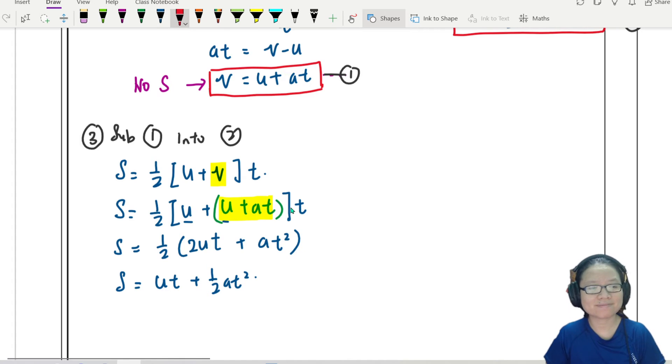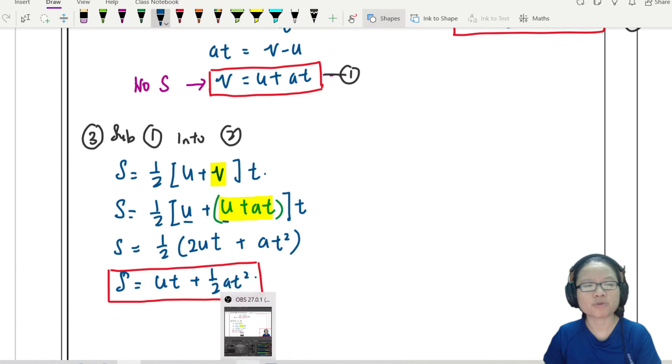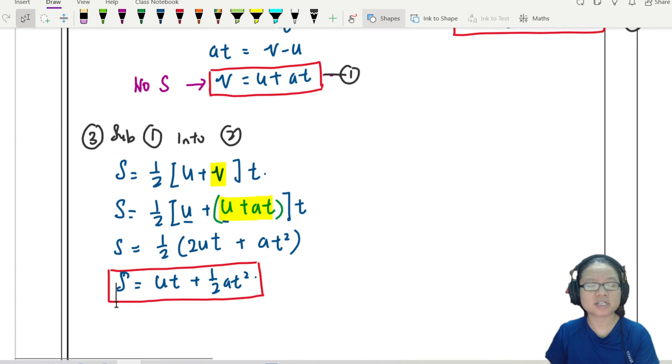This one, very nice. It has no terms in v. This is actually very useful. Sometimes the question may not give you any information about the final velocity of your motion. Because we want to predict motion, we want to predict how far it goes just by knowing how long it has traveled. So this is a great equation to use.